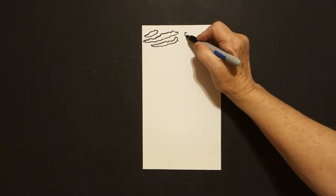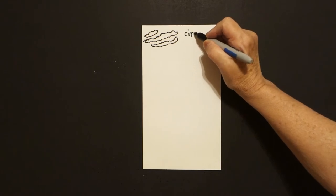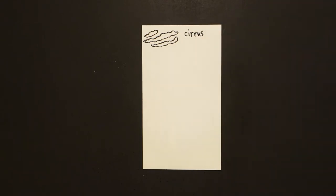These are called cirrus clouds and they are the highest clouds when you look up in the sky. They are the whitest clouds and they are the featheriest clouds.